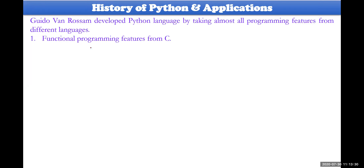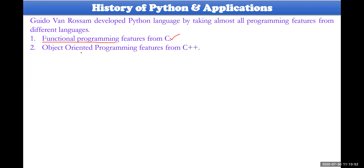There are many different kinds of features in Python developed by taking many languages into consideration. First of all, all functional programming aspects have been taken from C — what exactly a function will do when it is being executed. Such kind of features have been taken from C. All object-oriented programming features have been taken from C++, not from Java — from C++ only.